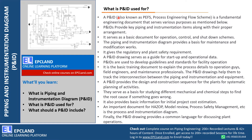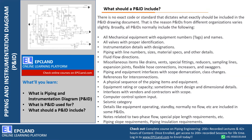P&IDs are the language of the design team, operation team, and construction team. We can discuss anything about the plant if we have this document. At the same time, there is no exact code or standard for P&IDs. This is why, for various organizations and various projects, this document may vary — but the basic concept remains the same: there will be symbols and a sequence associated with piping, instruments, and equipment.